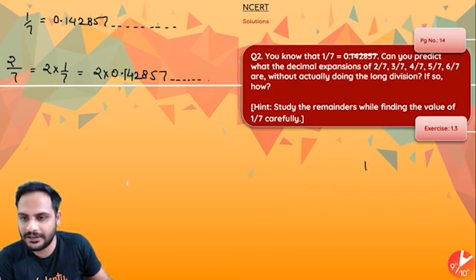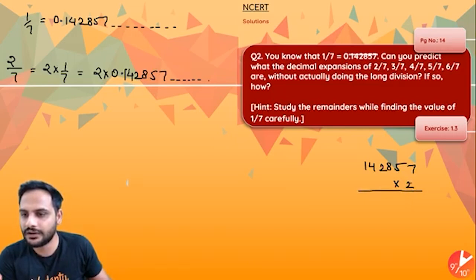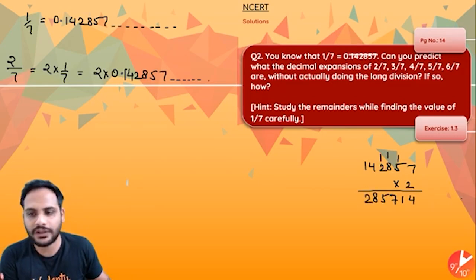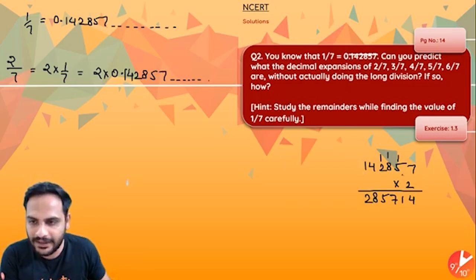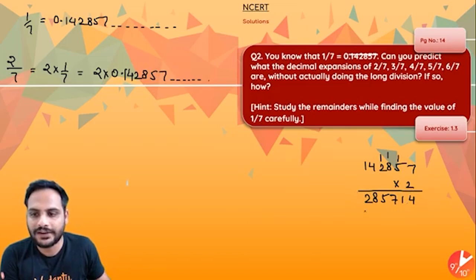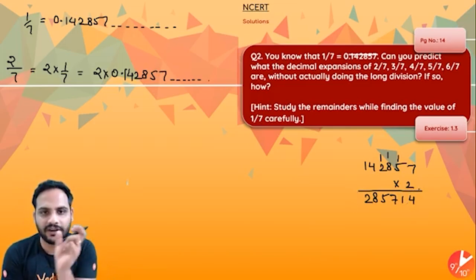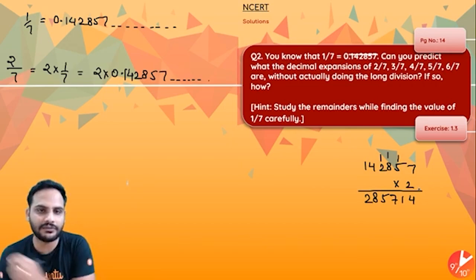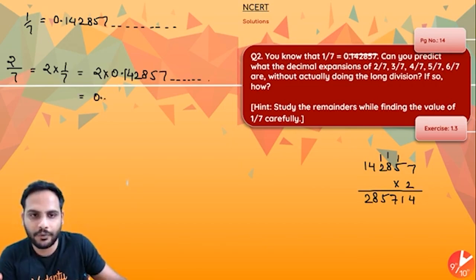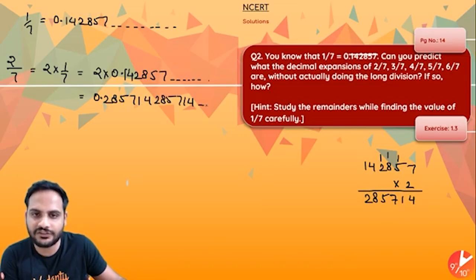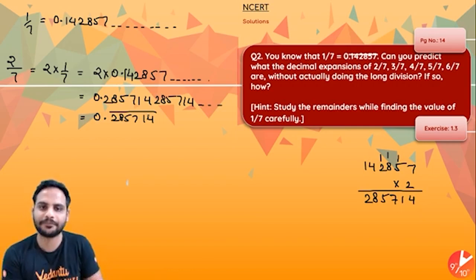So if I multiply 142857 by 2: 2×7=14, carry 1; 2×5=10+1=11, carry 1; 2×8=16+1=17, carry 1; 2×2=4+1=5; 2×4=8; 2×1=2. There is no remainder, so 1/7 × 2 gives us 285714. Therefore 2/7 = 0.285714 bar.